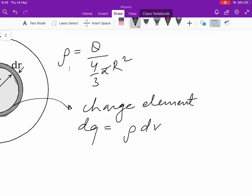So, that will be density times the volume. What is the volume of that small elemental shell? 4πr² dr - surface area of the sphere is 4πr², so this will be the volume.